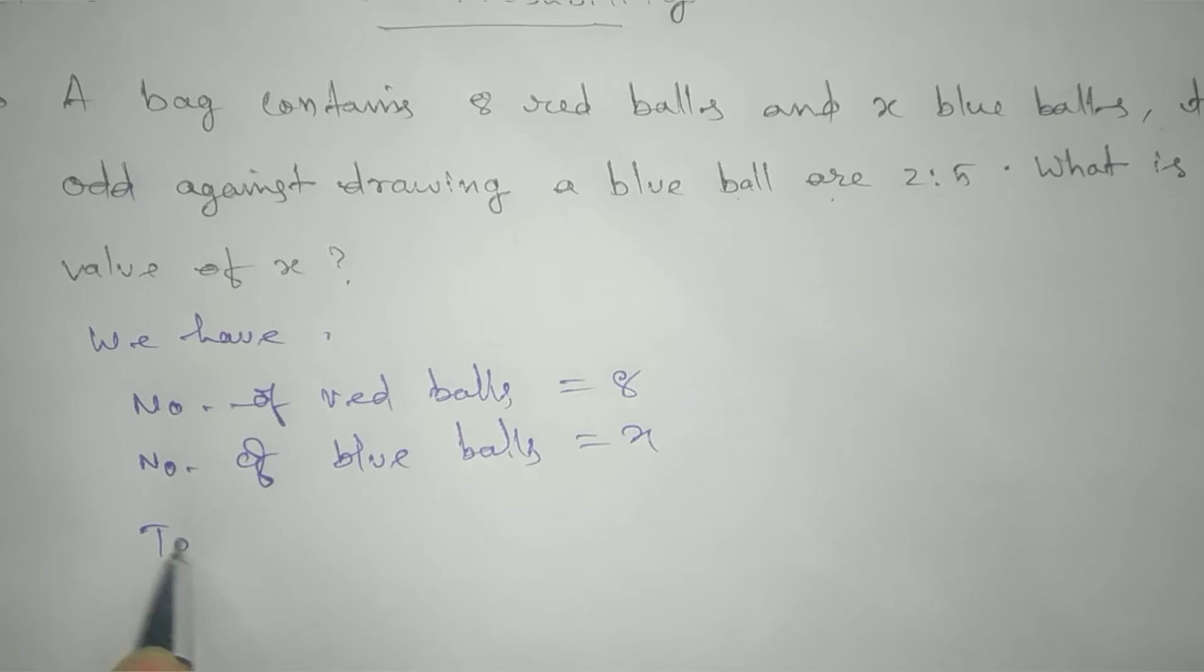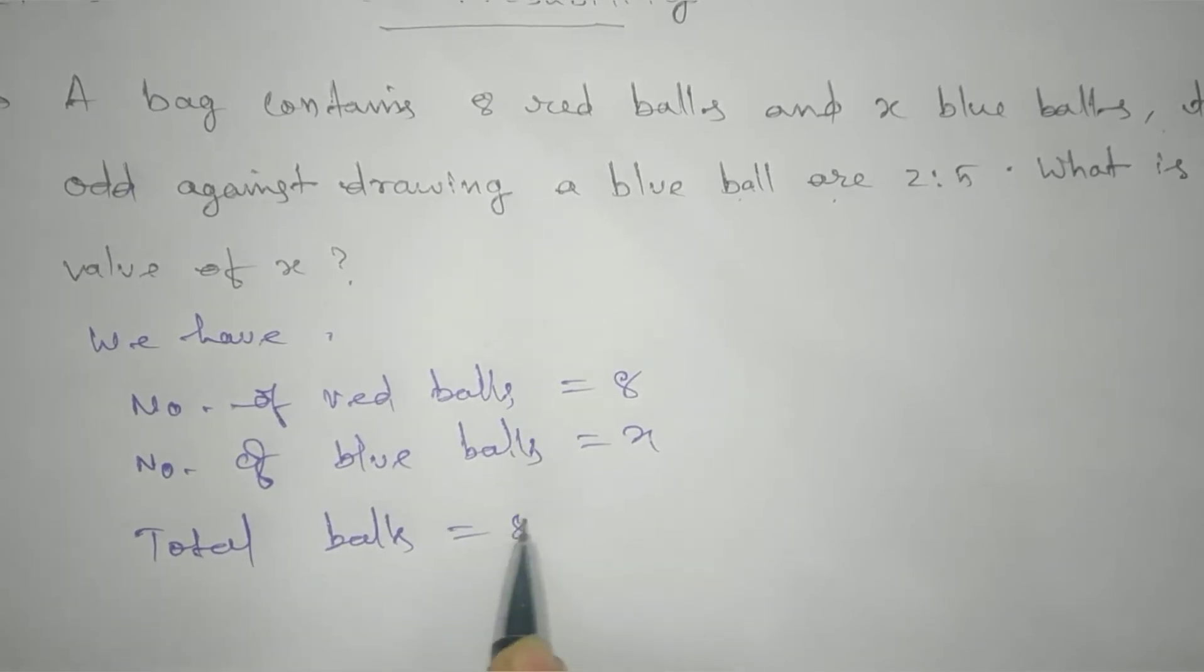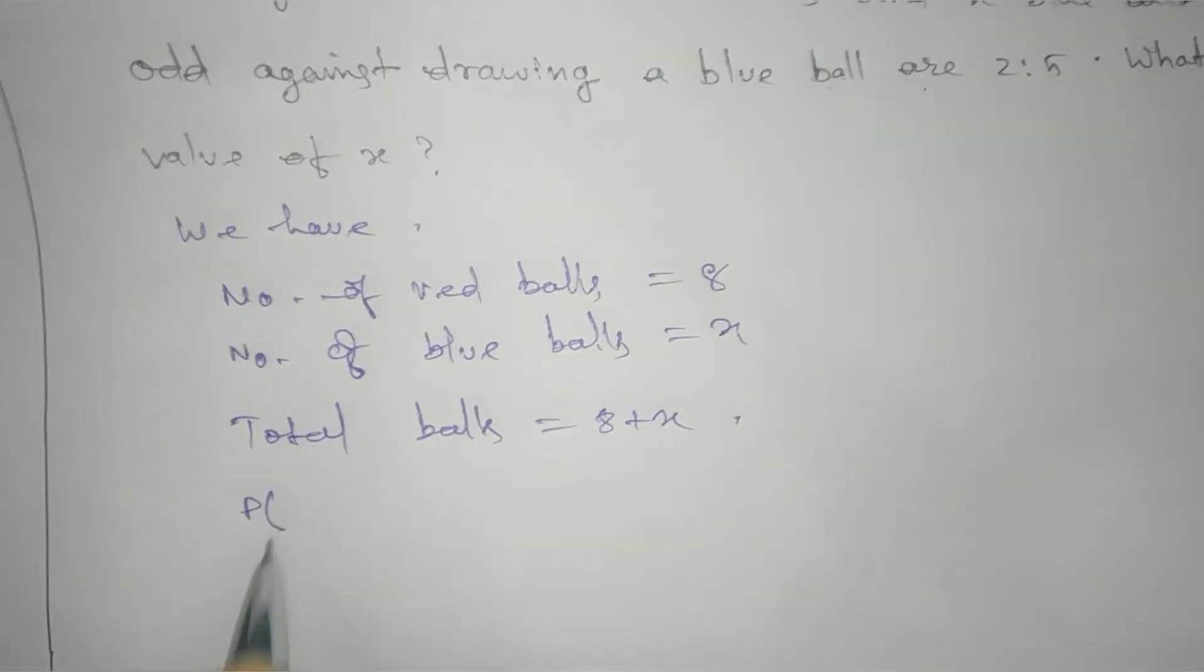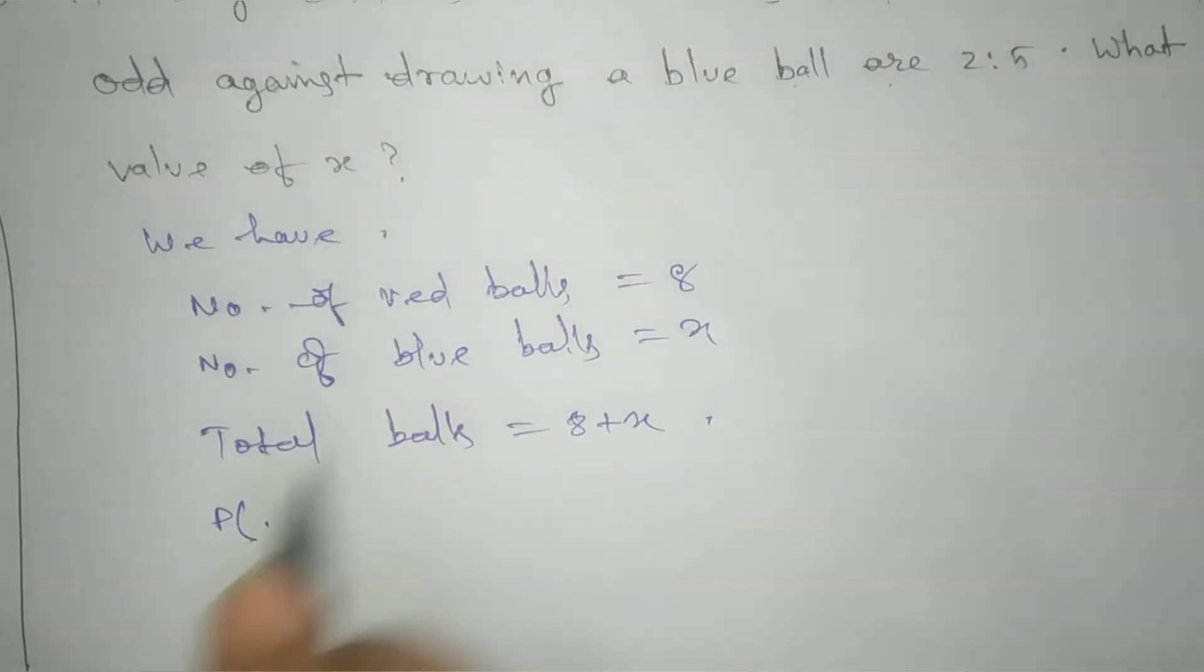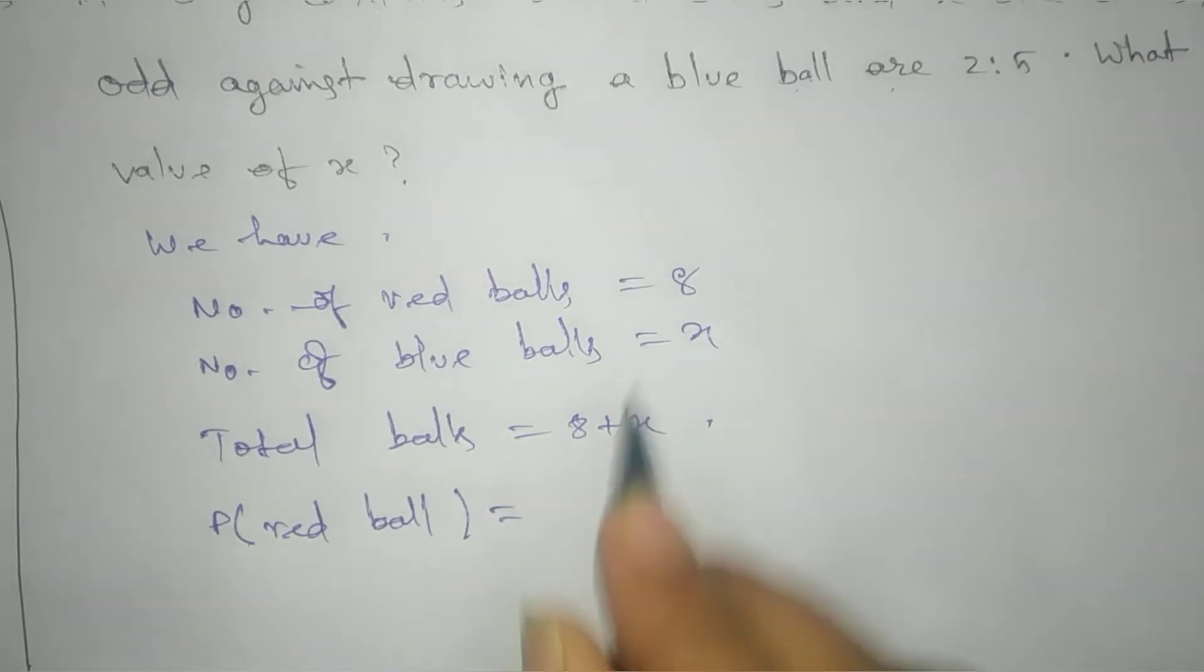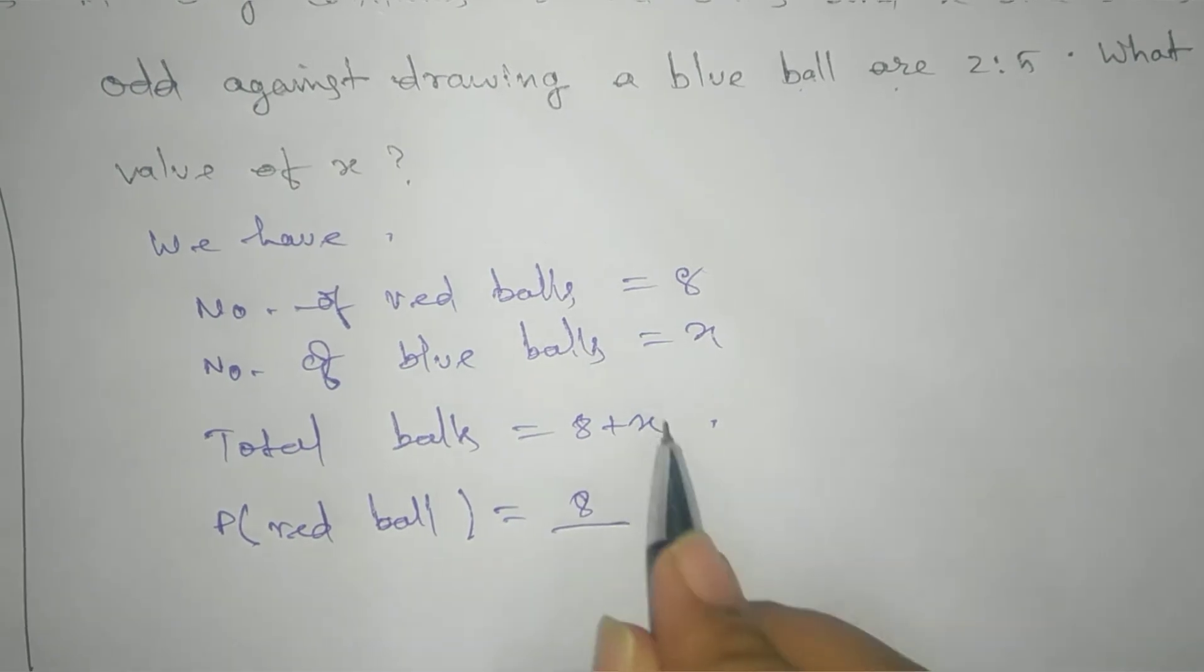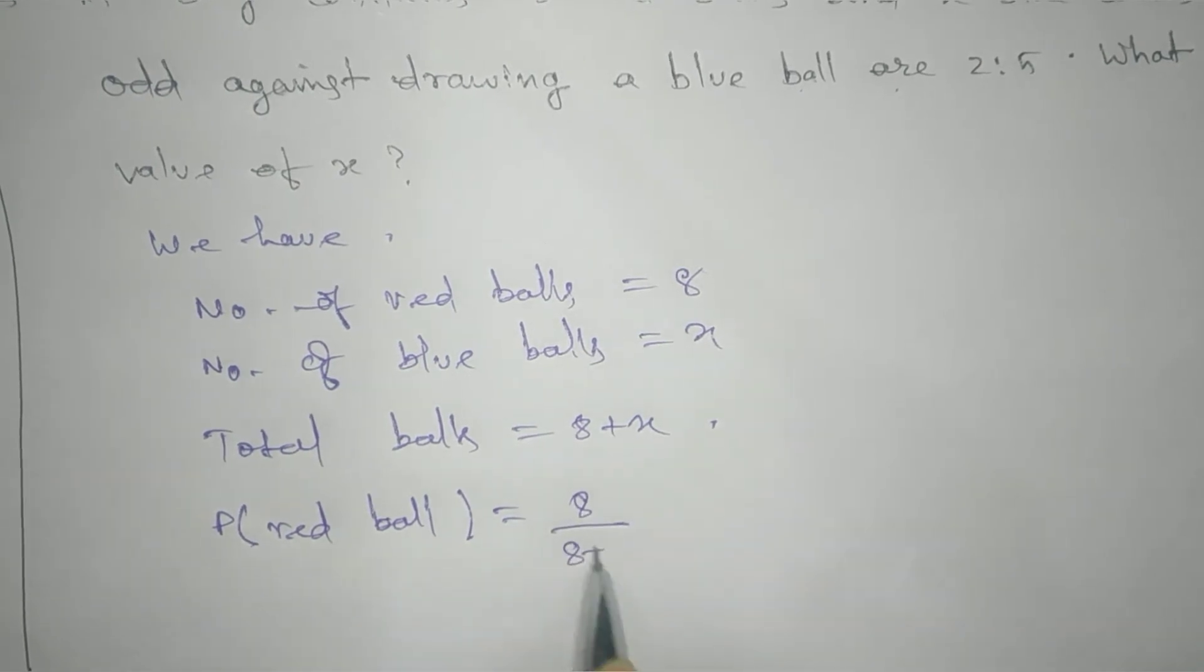Total balls equals 8 plus x. So probability of drawing a red ball is the number of favorable outcomes, which is 8, divided by total possible outcomes, which is 8 plus x.